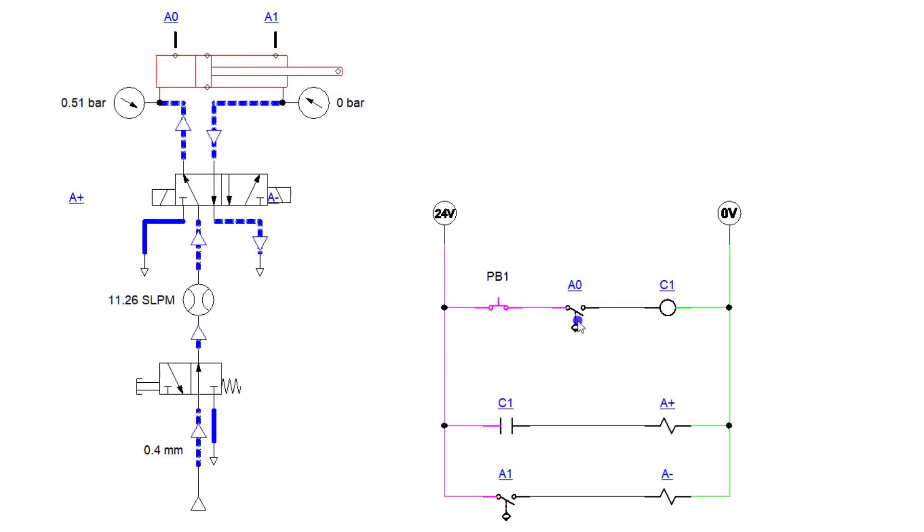Once A0 is made, you can see down here, then what happens is if the push button is made down here, then the A0 comes in, it turns on the coil, and then that coil comes down and turns on the coil for A plus.